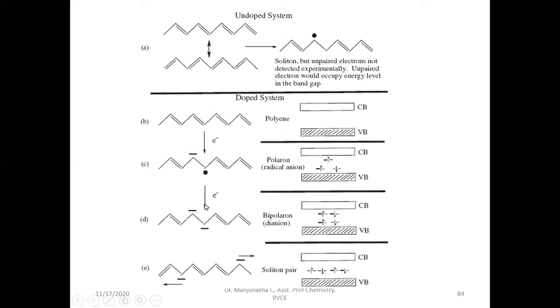If you add one more electron, this will also become negative charge. It will have two energy levels of this. And this is called di-anion, bipolaron, a negative charge.